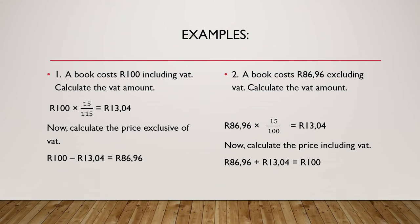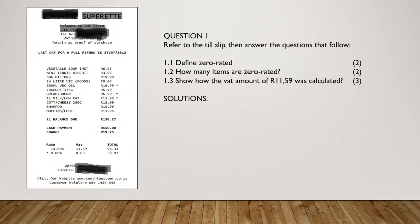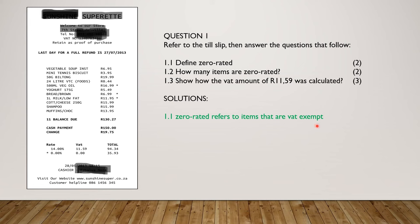Now an application question. Let's go back to the till slip. Refer to the till slip, then answer the questions that follow. Question 1.1: Define zero rated. So zero rated — items 1, 2, 3 have zero percent VAT, meaning I'm paying zero rands. So zero rated refers to items that are VAT exempt — we are not paying VAT on those items.